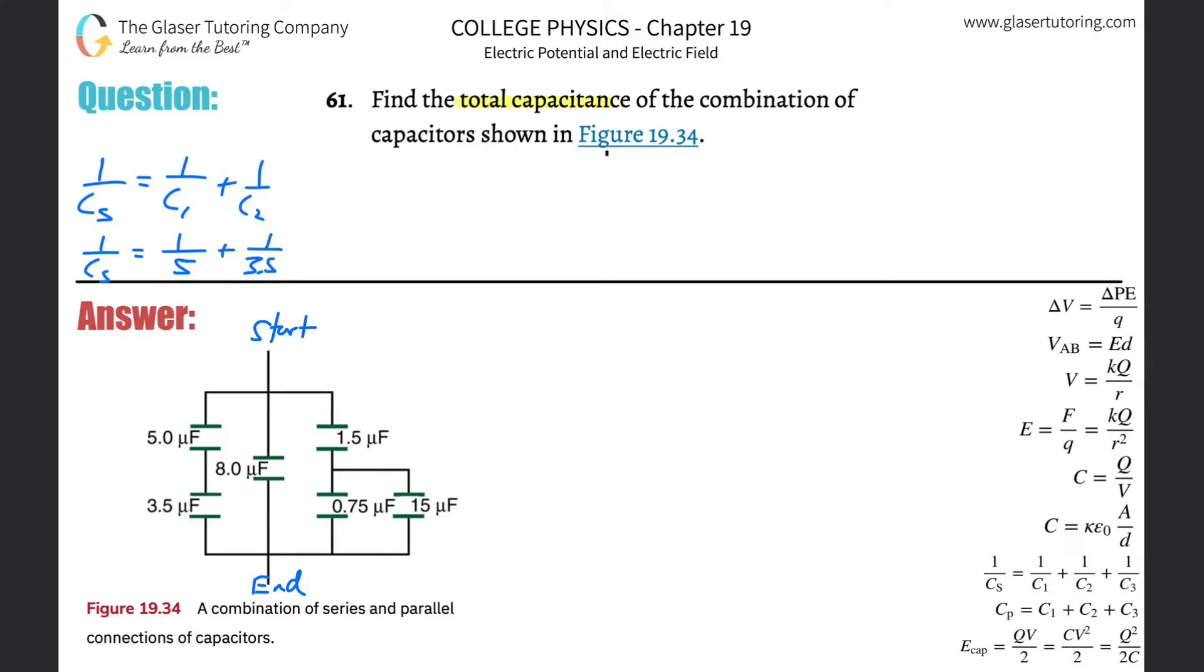So one over the capacitance in series will be equal to one over 5 microfarads plus one over 3.5 microfarads. The beautiful part is you can leave it all in microfarads—you do not need to do any conversion, just make sure everything is in the same units. When we add these together, one divided by 5 plus one divided by 3.5, I get a value of 0.486.